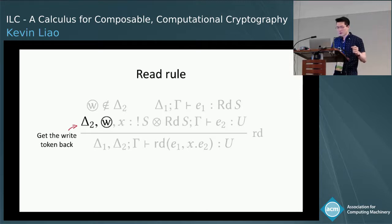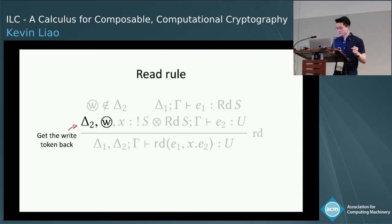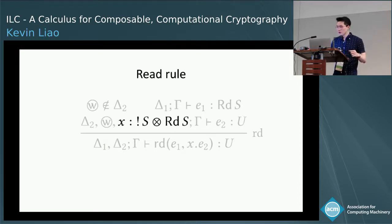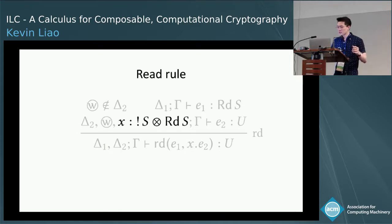When typing E2, we get the write token back. So in the body of the read expression, if we need to write again, we can do that. We also extend the affine context with X, which is an affine pair: the first coordinate is the value we read off the channel, and the second coordinate is the read endpoint.